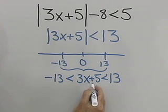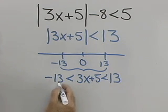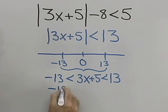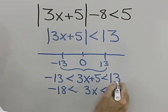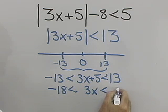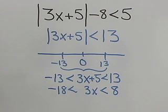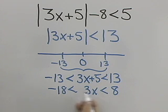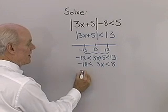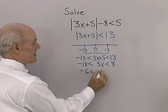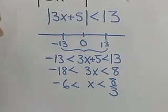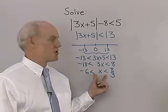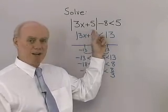Now I just have to solve it. Adding negative 5 to each of the three expressions, I have negative 18 less than 3x less than 8. Next, I divide each expression by 3 to isolate x, giving me negative 6 less than x less than 8 thirds. So there's the inequality that is the solution to this absolute value inequality.